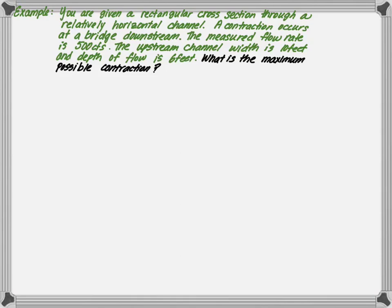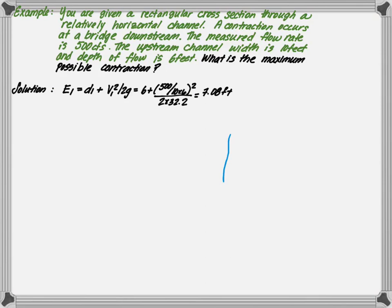Let's do a couple of examples to help illustrate this concept. You're given a rectangular cross-section through a relatively horizontal channel. A contraction occurs at a bridge downstream. The measured flow rate is 500 CFS, the upstream channel width is 10 feet, and the depth of flow is 6 feet. What is the maximum possible contraction? The first step is to determine the energy at the upstream section. The energy is the depth — 6 feet — plus the velocity squared, which is 500 divided by the area (10 times 6), squared, all divided by 2 times 32.2. That gives us a specific energy of 7.08.